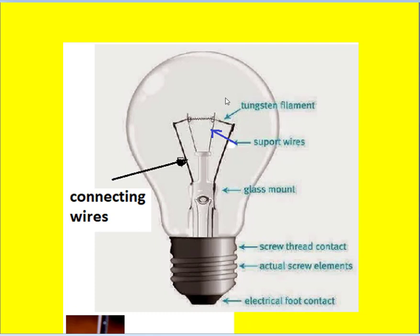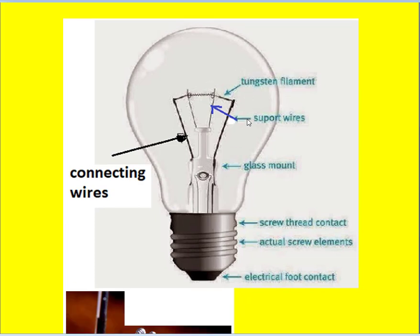Argon plus nitrogen gas is used in this bulb when its rating is more than 40 watts. These gases are used to avoid the oxidation of the tungsten filament in this lamp.